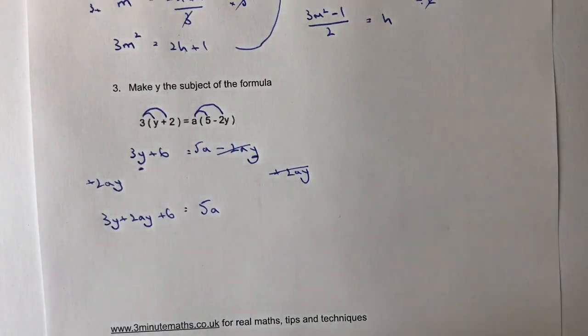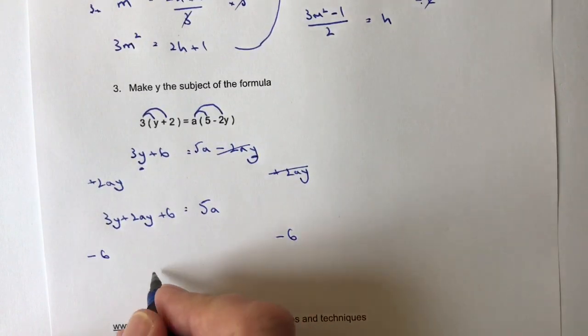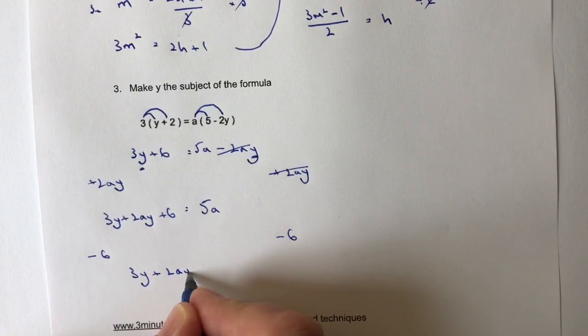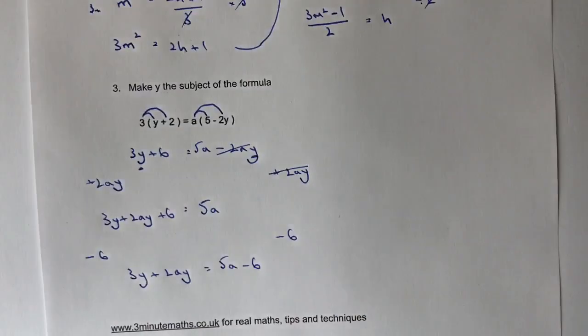And the way I'm going to do that is I'm going to minus 6. So if I minus 6 on both sides, on the left-hand side I get 3Y plus 2AY, and on the right-hand side I get 5A minus 6.